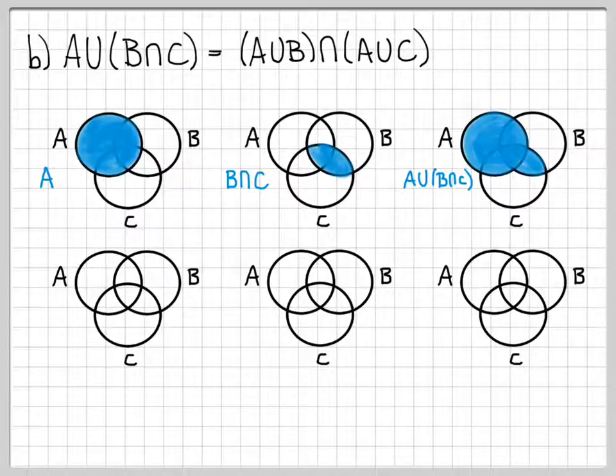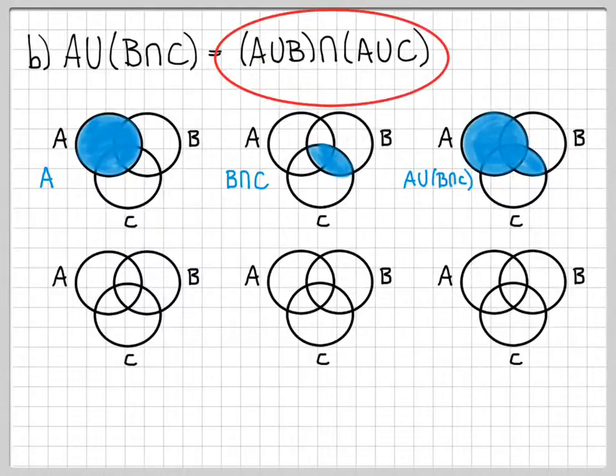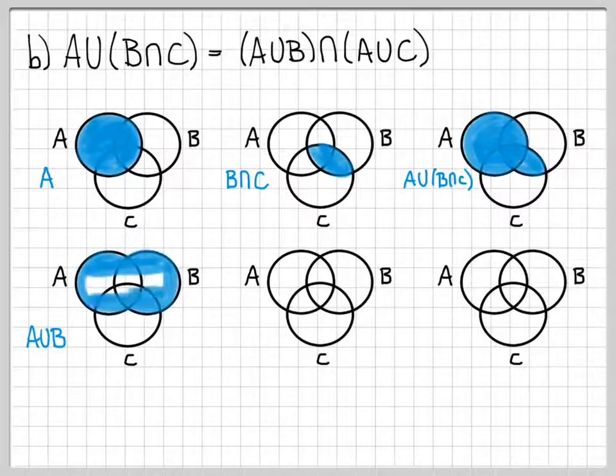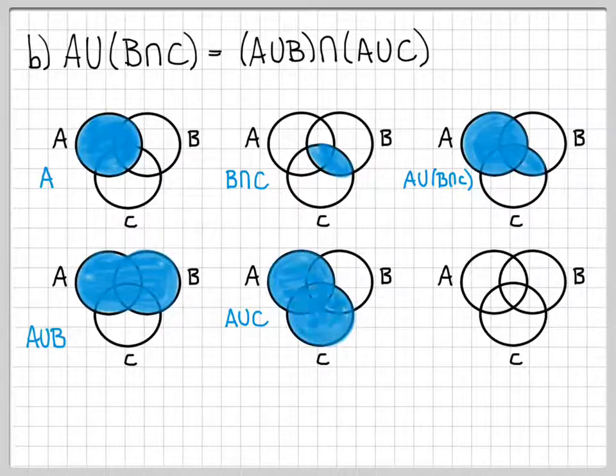Let's do similar work for the other identity, this identity right here. So I need to shade in A union B. So that's all the common area between A and B. So this is the set A union B. I need to shade in or create a Venn diagram for A union C. So that's all of this area.